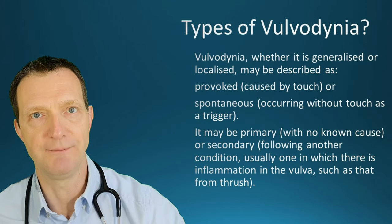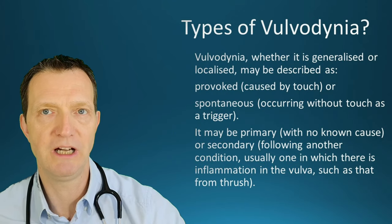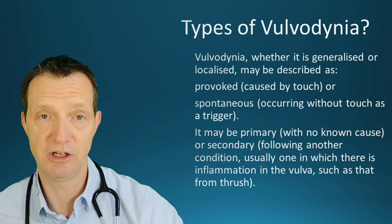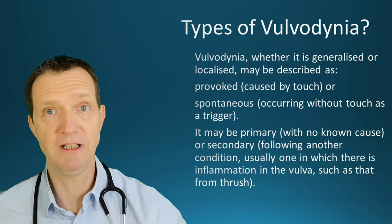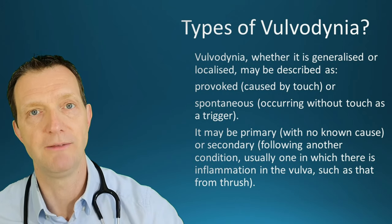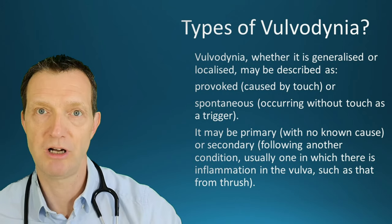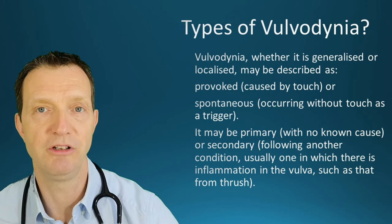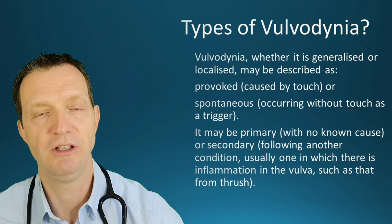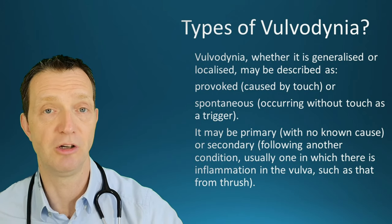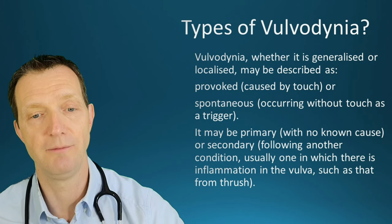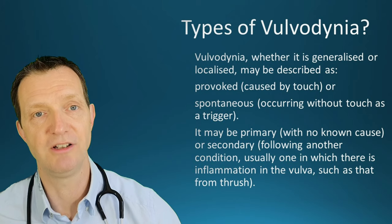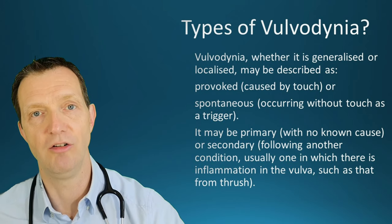The types of vulvodynia: it can either be generalized or localized, and described as provoked — which occurs by touch — or spontaneous, without any obvious trigger. It can also be classified as primary, meaning no known cause, or secondary, which follows a condition, usually inflammation of the vulva such as thrush. Many of the cases I've seen of vulvodynia occur after a quite severe case of thrush.